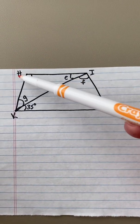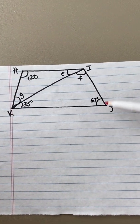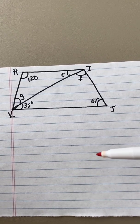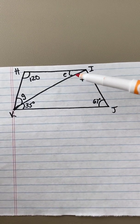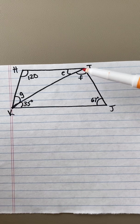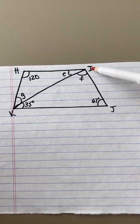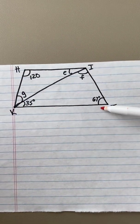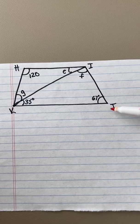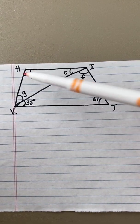I have trapezoid HKJI. We have learned through our hands-on activities about the properties of trapezoids, and we know that there is one set of parallel lines. So in this example, JK is parallel to IH.